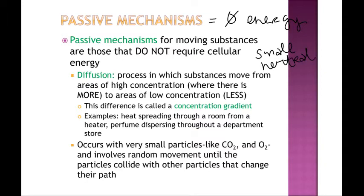Examples of small neutral substances include things like oxygen, carbon dioxide, and water. The most straightforward mechanism for materials to move in and out of cells is diffusion — this is our first passive mechanism. Diffusion is the process of substances moving from where there is a lot to where there is little, so the movement is always from high to low.